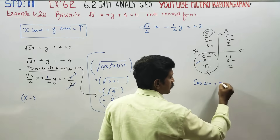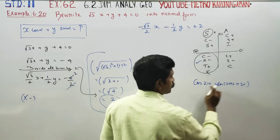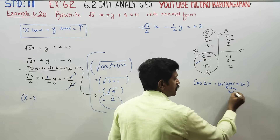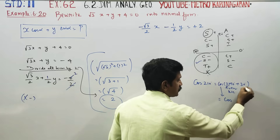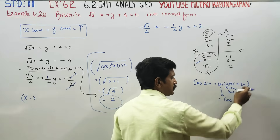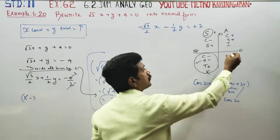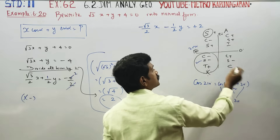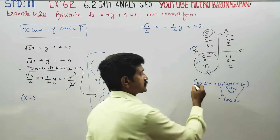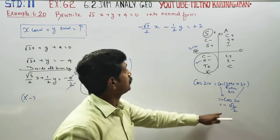Cos 210° can be written as cos(2×90° + 30°). Since 2×90° is an even multiple of 90°, there is no change in the trigonometric ratio: cos 210° = cos 30° with the sign of the 3rd quadrant. Cos is negative in the 3rd quadrant, so cos 210° = −√3/2.